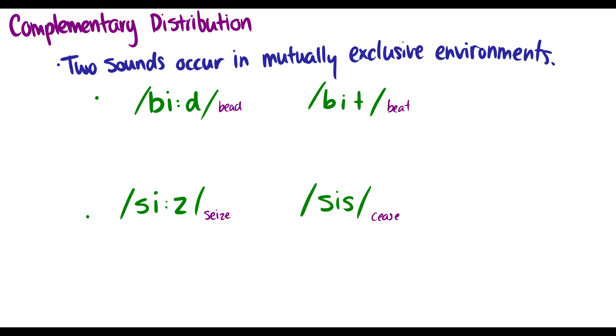However when we take a look at bead and beat in bead we have this lengthening. We have this lengthening of the i and in beat we don't. Now this lengthening occurs before voiced consonants. So we see this in the word seas as well. So for seas this i is lengthened. This e is lengthened before z which is a voiced consonant. But in cease we don't see this lengthening. So what this means is that this e and this e they're not minimal pairs. Okay they're not minimal pairs. So we don't make any distinction between them in our meanings. So we say bead or bead they're both the same word. So we don't hear a distinction there.